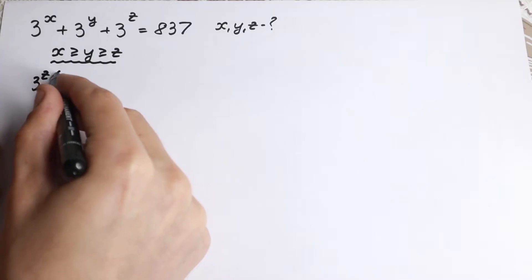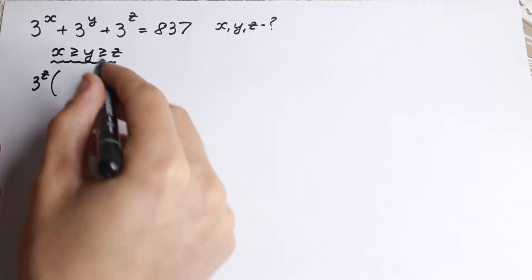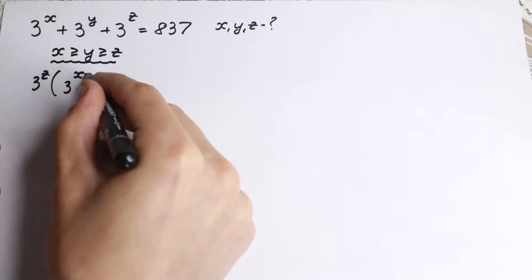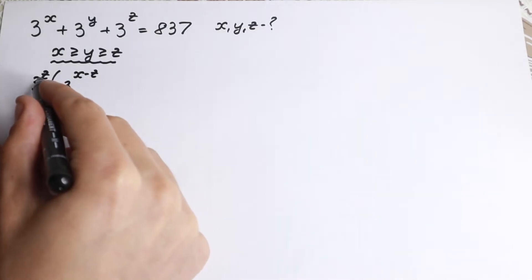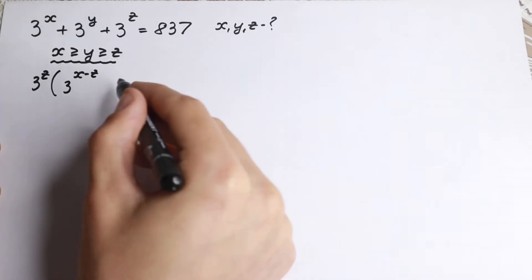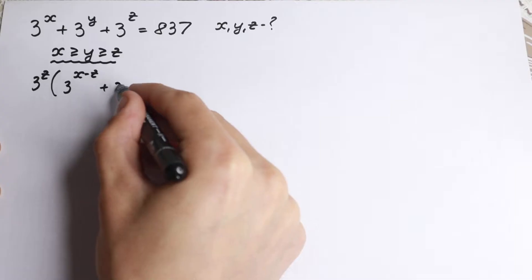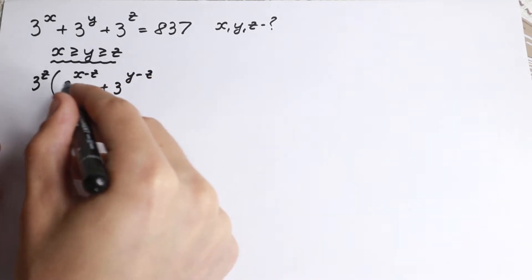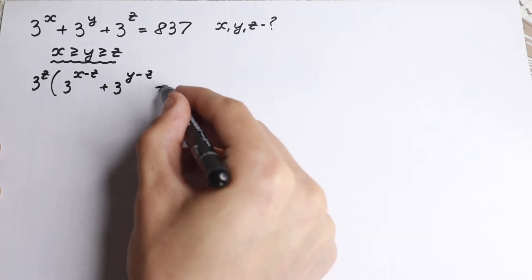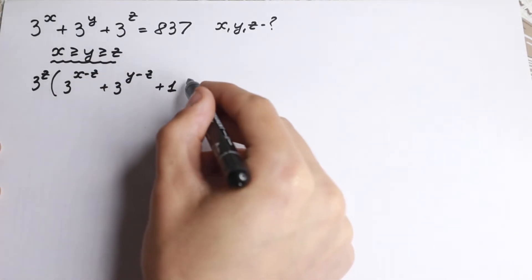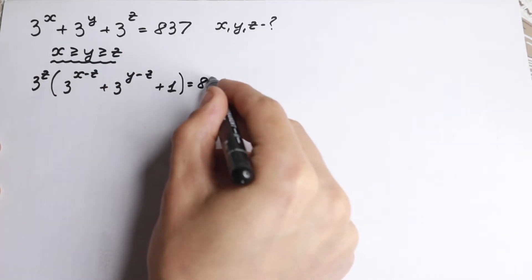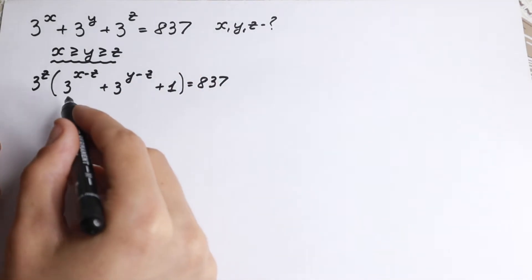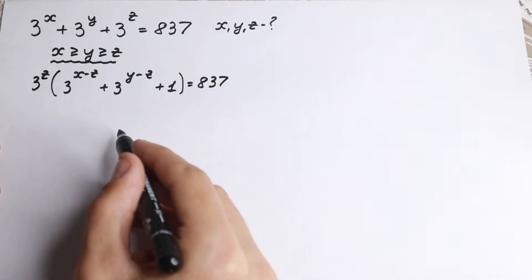So we have 3 to the power z. In parentheses we will have 3 to the power x minus z, because we factor out 3 to the power z, plus 3 to the power y minus z, plus 1. This whole expression equals 837.